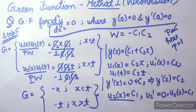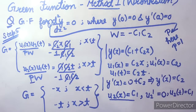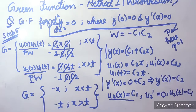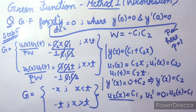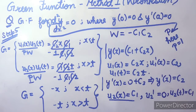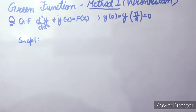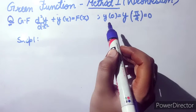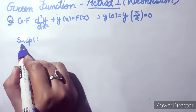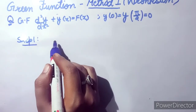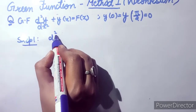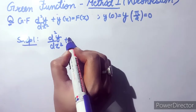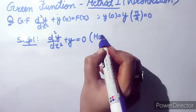These are the step-by-step solutions for this Green function question. Whenever you are asked to find the Green function using the Wronskian method, these five steps apply. Now let's look at another example using the Wronskian method. In this next question, we have to find the Green function for a non-homogeneous differential equation with given boundary conditions.